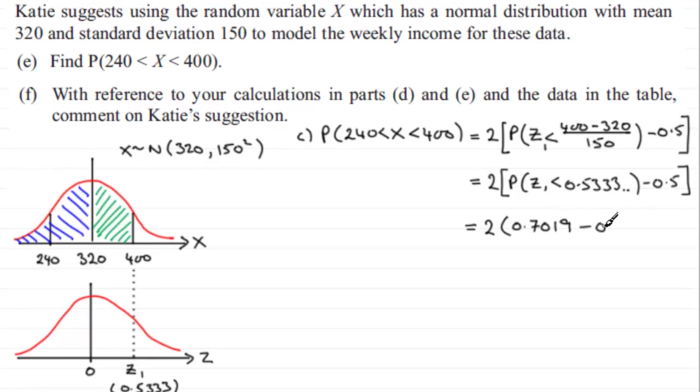Now for part F, we're asked: with reference to your calculations in parts D and E and the data in the table, comment on Katie's suggestion that the random variable X has a normal distribution with a mean of 320.